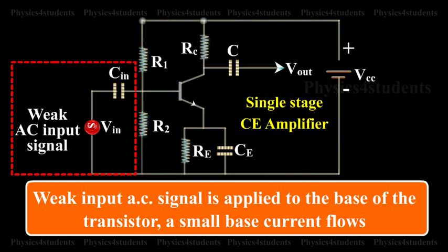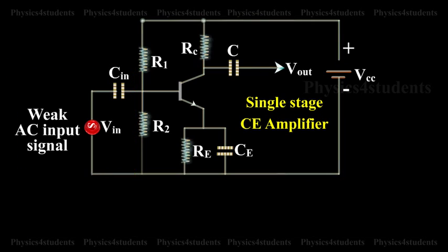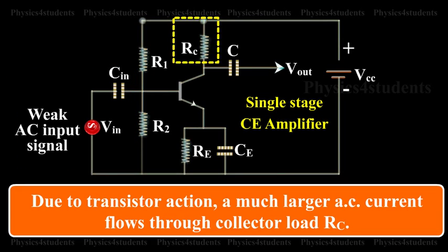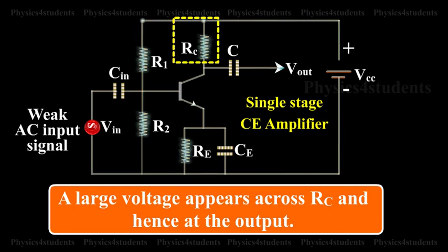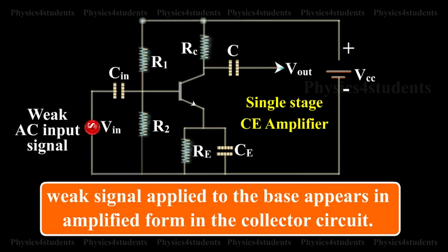Working of the Single Stage CE Amplifier: When a weak input AC signal is applied to the base of the transistor, a small base current flows. Due to the transistor action, a much larger AC current flows through the collector load RC. A large voltage appears across RC and hence at the output. Therefore, a weak signal applied to the base appears in amplified form in the collector circuit.